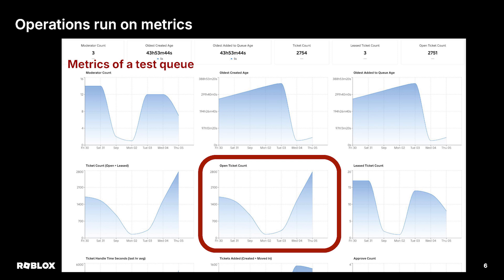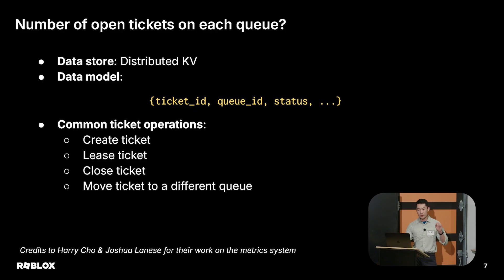As I was zooming in, this is the end product — so how do we build this? In particular, how do we build the chart for open ticket count? This is just a counting problem, it seems. Our datastore is a distributed key-value store like CockroachDB for the ticket data. The data model is extremely simple: ticket ID, queue ID, and status.